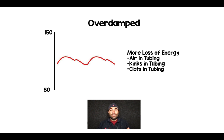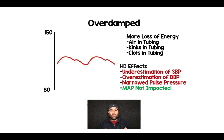When you have an over-damped arterial line waveform, it's going to look super small, because there's something in the line that's causing more loss of energy. This could be things like air bubbles in the tubing, kinks in the tubing, or little clots in the tubing. All three of these things will damp or reduce the waveform. Why is this important? Because there are hemodynamic effects — it's going to underestimate your systolic blood pressure and it's going to overestimate your diastolic blood pressure. You're going to see a narrowed pulse pressure.